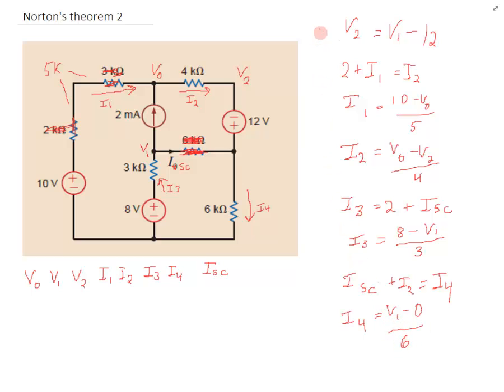Then we can say I4 equals V1 minus 0 over 6K. So now we have 8 equations, 8 unknowns.